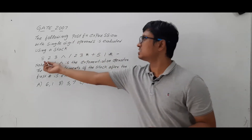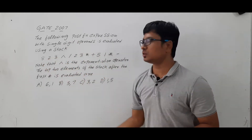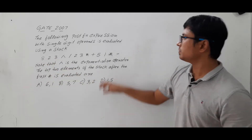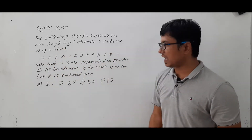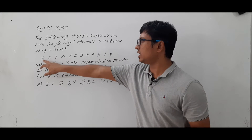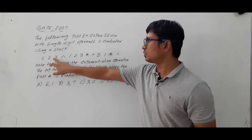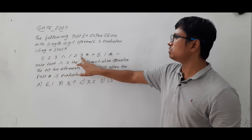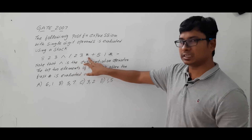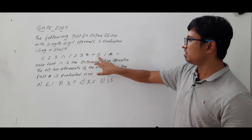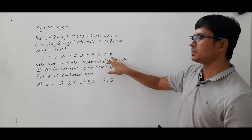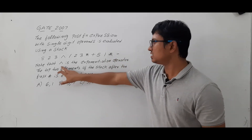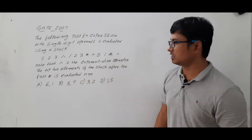Single digit means this is 8, this is 2, this is 3 — don't think of it as 823. So they have given: 8 2 3 ^ / 2 3 * + 5 1 * −. Note that ^ is an exponentiation operator. The question asks: what are the top two elements of the stack after the first multiplication is evaluated?